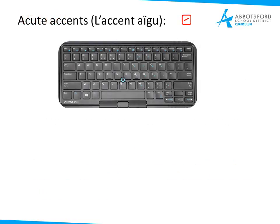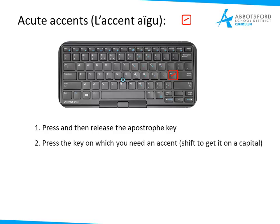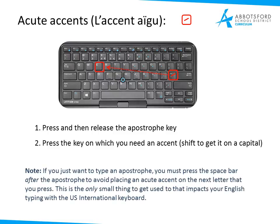Here's how you do the aigu or acute accent. Press and then release the apostrophe key, which is on the right next to your Enter key, and then press the key you need to put the accent onto — I've chosen E most often here as it's the most common in French, but in Spanish it might be an I or an A. For a capital, you do Shift+E. So: apostrophe, release, then choose the letter. If you just want to type an apostrophe, press the apostrophe and then the space bar to avoid putting an acute accent onto the next letter. That's really the only small adjustment you need to get used to with the U.S. International keyboard.